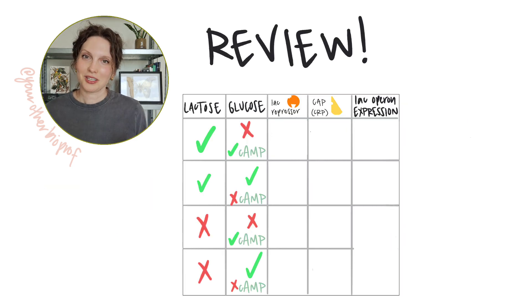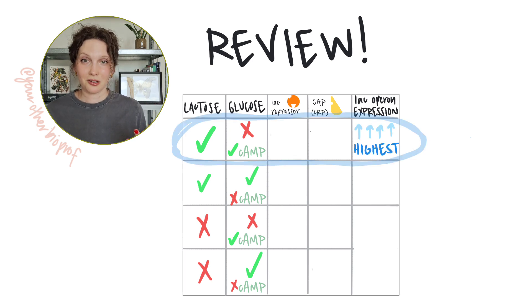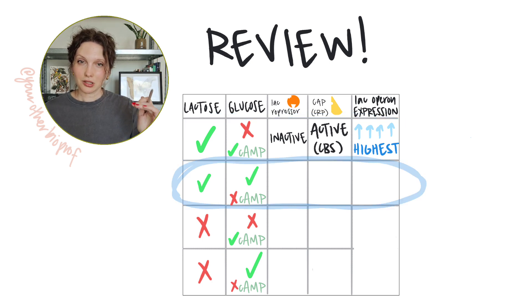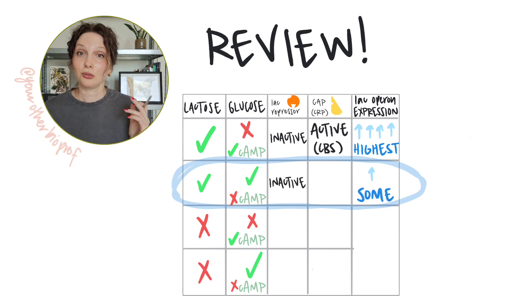The lac operon will be expressed most strongly when lactose is present but glucose is absent. In that scenario, the lac operon is unrepressed and it's benefiting from transcriptional activation, that little assist from CAP. Expression will be lowered when lactose is present and glucose is also present due to the lack of that additional assist from the CAP protein. Not going to get that extra help anymore.